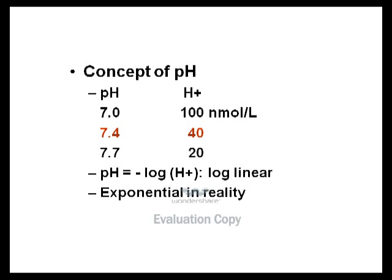The concept of pH was first defined in the early 20th century. pH stands for the power of the hydrogen ion concentration, defined as the negative logarithm of the hydrogen ion concentration. pH standard state is equal to 7.4, the same as 40 nanomoles per liter. As hydrogen ion concentration goes up, pH goes down, and as hydrogen ion concentration goes down, pH goes up, all in an exponential fashion.